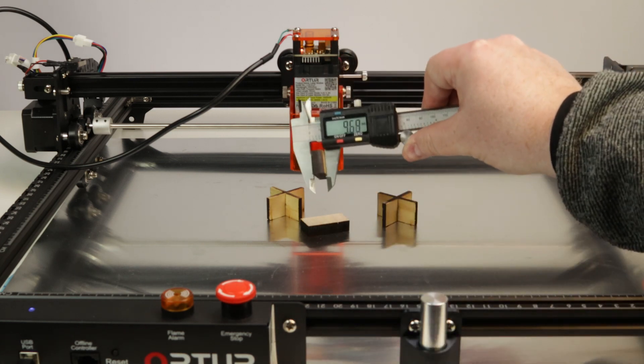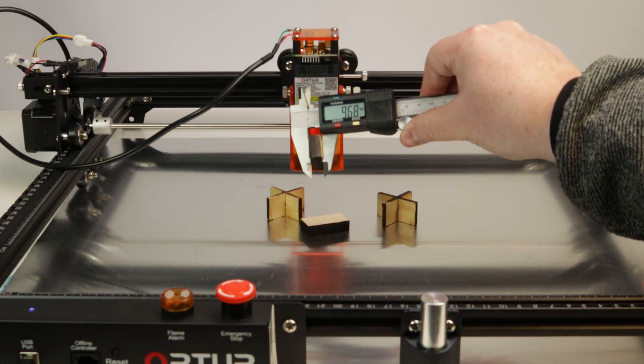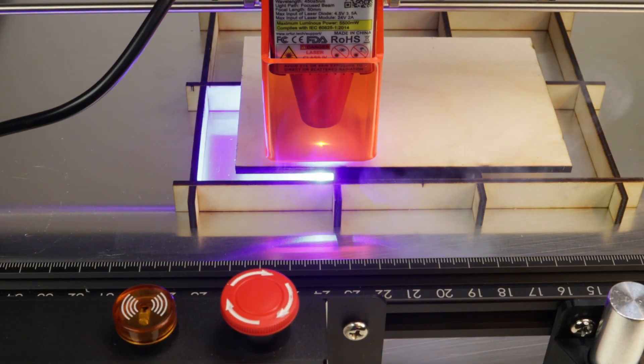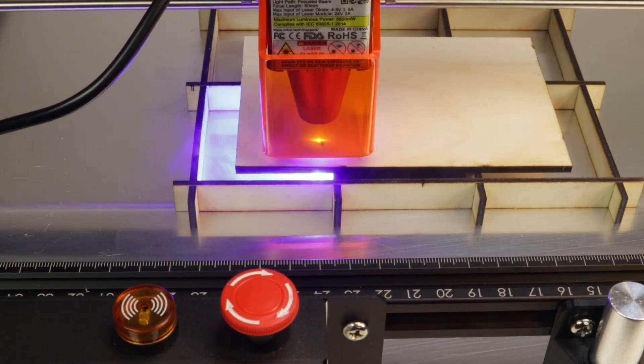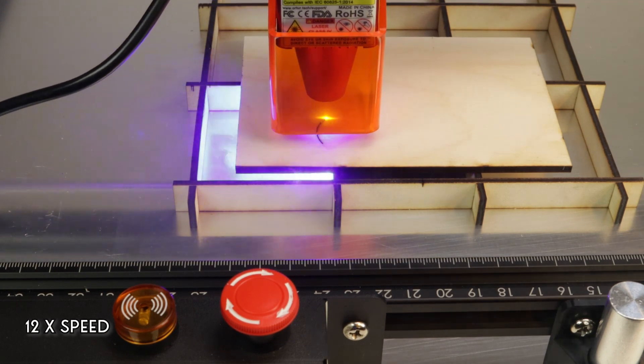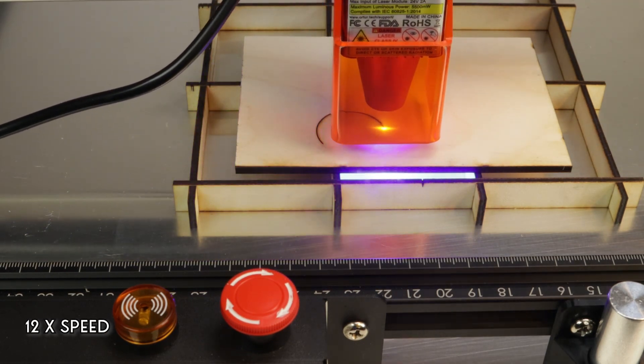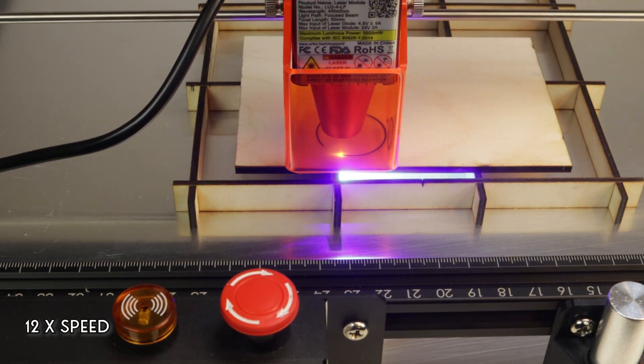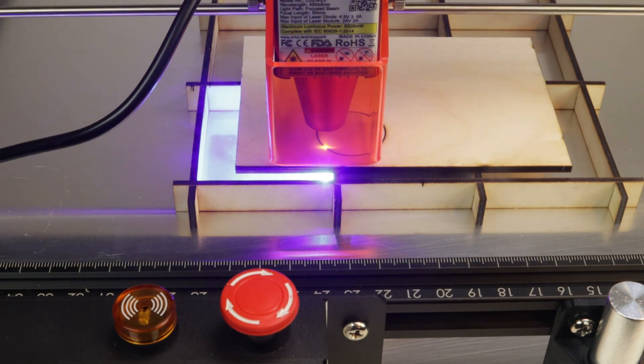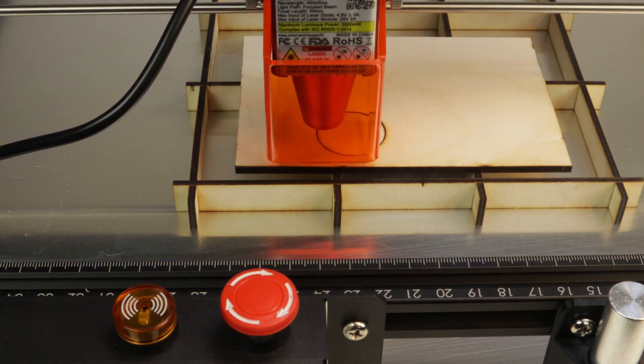As mentioned, this laser module also comes with an air assist. This will help clean up the results of cuts, and especially on wood, where charcoal and melted wood tends to stain a lot. Let's make one cut without the air assist for comparison.